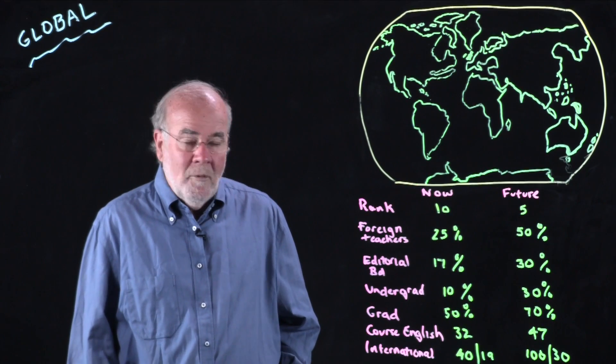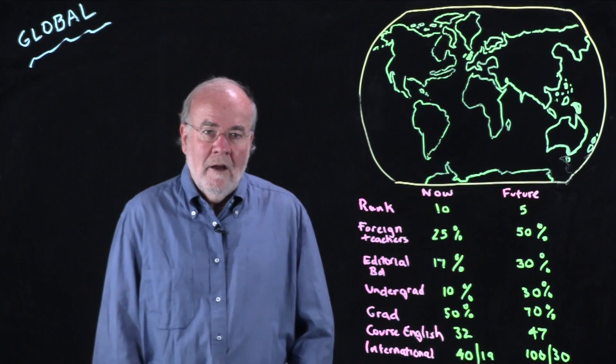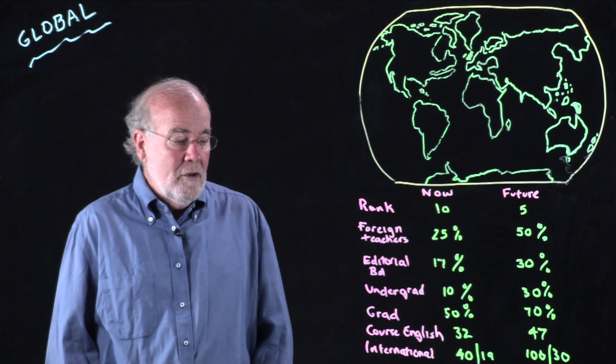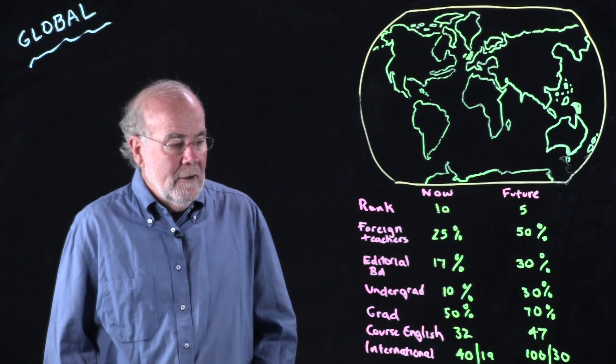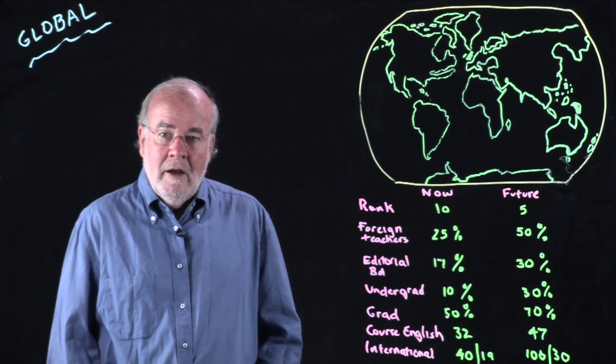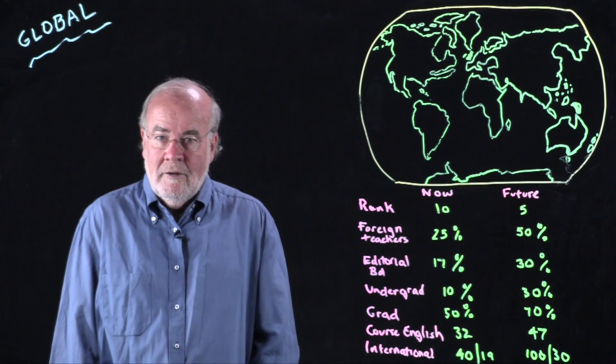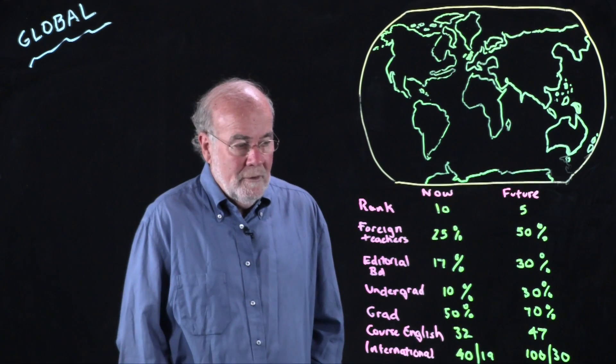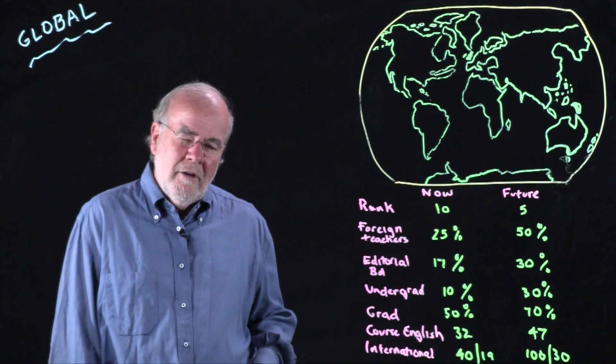You can see that they recognize to be a global player they want to expand the number of foreign faculty. Already in this particular department, 25 percent of the faculty are foreign, predominantly from the US, Canada, or the UK, and their goal in the future is for 50 percent to be foreign faculty. They want to increase their participation in editorial boards on SSCI journals. Right now 17 percent of their faculty participate in a key international board; their goal is to get up to 30 percent.